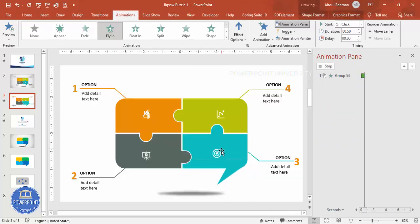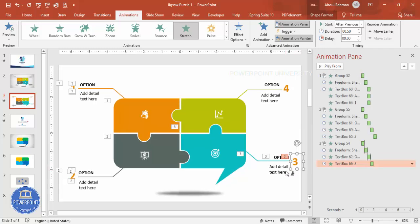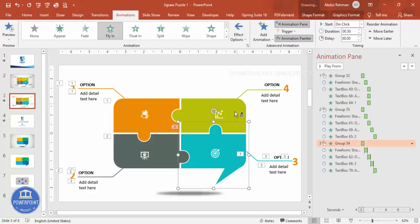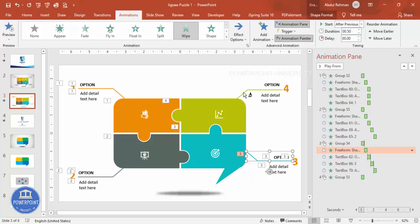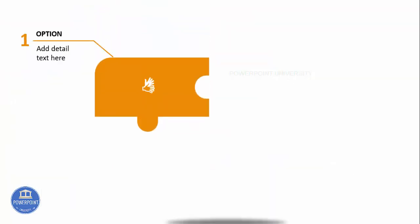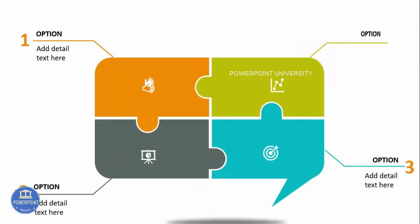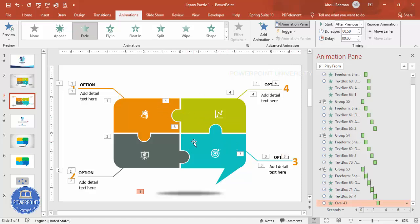For the third piece, apply the same animations — fly in from the right, then adjust to From Left for the fourth. Double-click Animation Painter to apply to multiple objects. For the last piece, use directions like top, right, or left as preferred. Finally, add a Fade animation to the background and set it to After Previous. Now when you play the slide, you can see all four jigsaw pieces animate in sequence, completing the jigsaw puzzle design in PowerPoint.